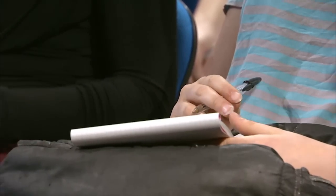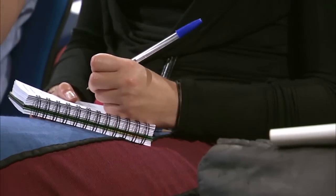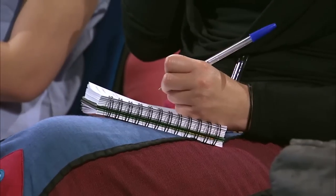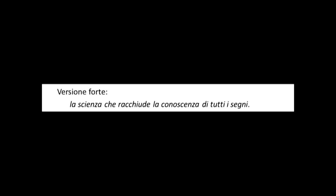Sembra una battuta, in realtà non lo è, perché affinché qualcosa possa essere usato per mentire occorrono dei requisiti a questo qualcosa. Naturalmente capire quali sono questi requisiti è il cuore di tutto il corso di semiotica. C'è un'altra definizione che vi propongo, poco conosciuta, ma a me pare buona ed efficace. Ho scritto lì: versione forte e versione debole. Versione forte: 'la semiotica è la scienza che racchiude la conoscenza di tutti i segni' — definizione ambiziosa, si potrebbe dire imperialistica, nei confronti di tutte le discipline.